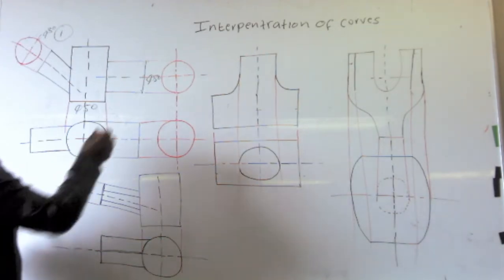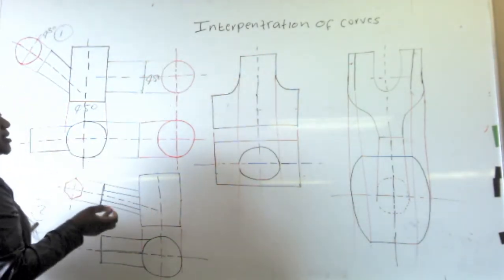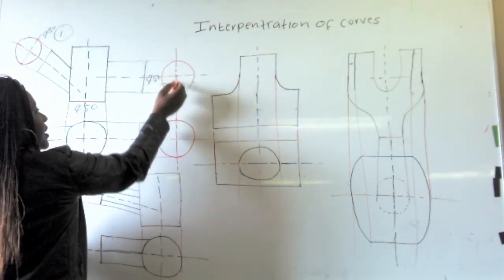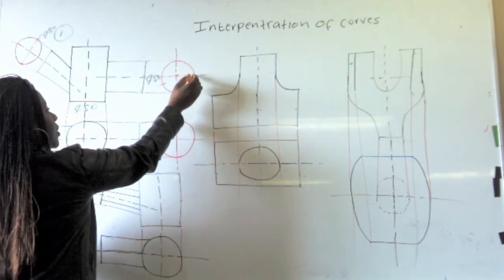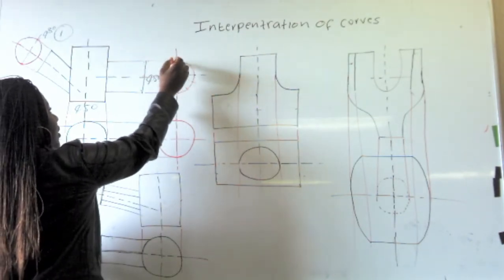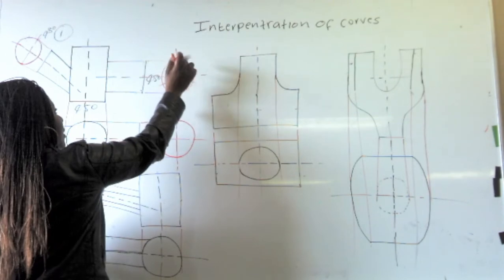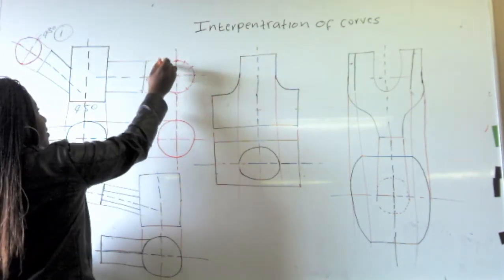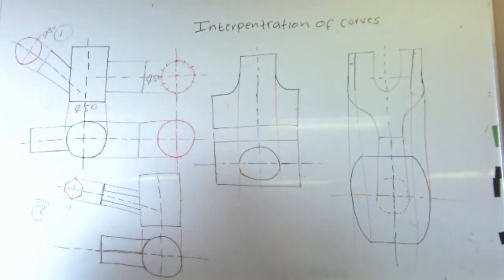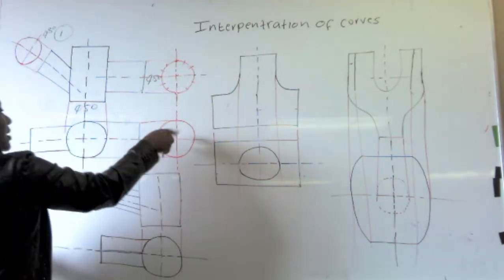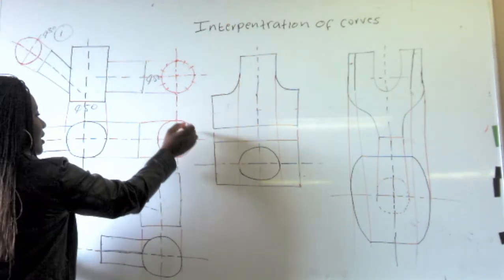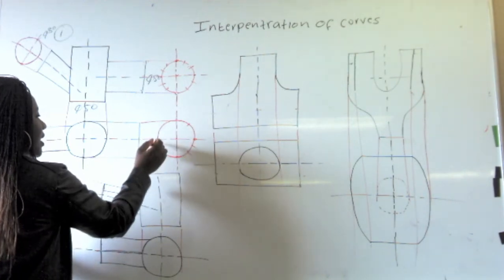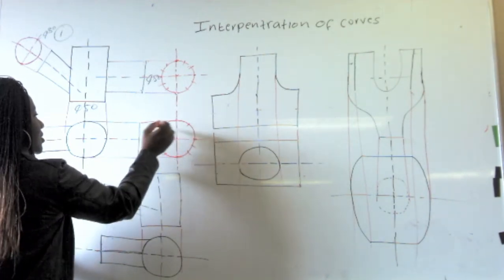The first thing you must do is divide this circle into 12 divisions. Open the compass and put it on the circle, striking with the radius of the circle at each point to mark off 12 equal divisions. You do the same on the other circle — put the compass here, you strike, you strike, you come here and repeat all the way around using the radius of the circle.